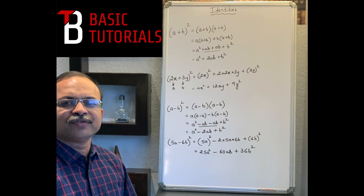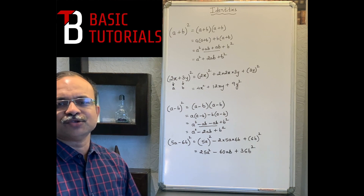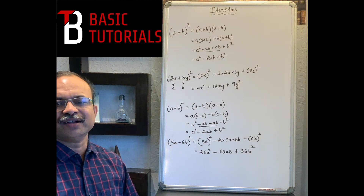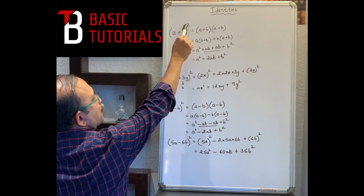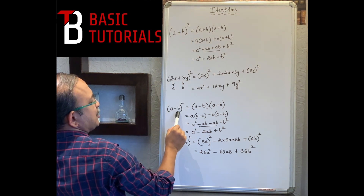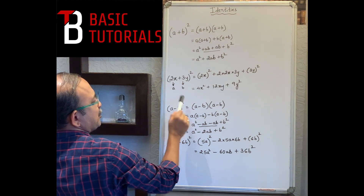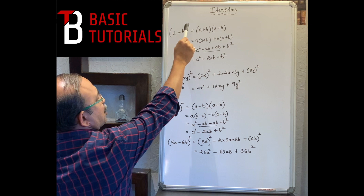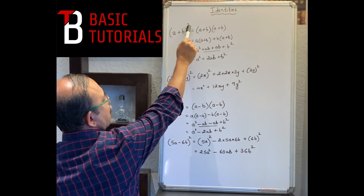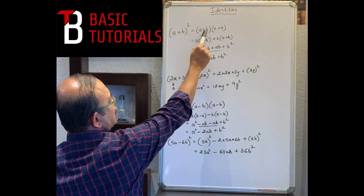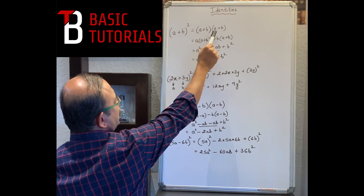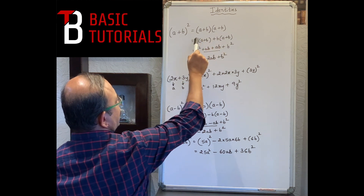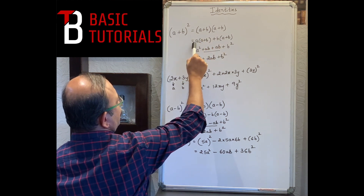Hello friends, today we are going to study the most important concept of algebra — identities: (a+b)² and (a-b)². Now, square means you multiply by the same thing twice, so when we multiply (a+b) into (a+b), you take a out and multiply this a with the whole (a+b).